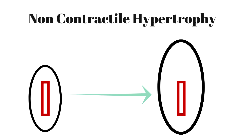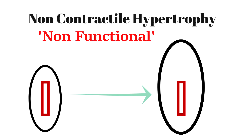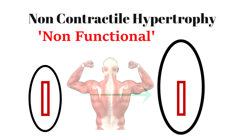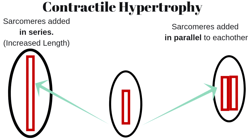The two categories are contractile hypertrophy and non-contractile hypertrophy. Non-contractile hypertrophy, also known as sarcoplasmic hypertrophy, is an increase in the size of the muscle cell through non-contractile components such as glycogen and hydration. It is also known as non-functional hypertrophy, though that term is debated. The key focus for weight training and resistance training is contractile hypertrophy — the increase in the sarcomeres and myofibrils in parallel to each other.